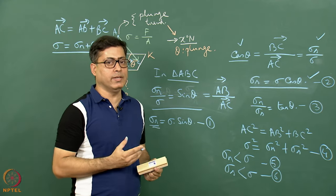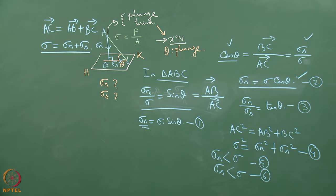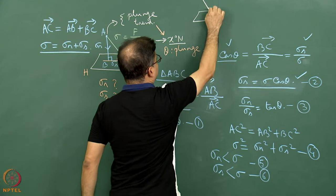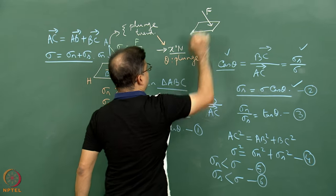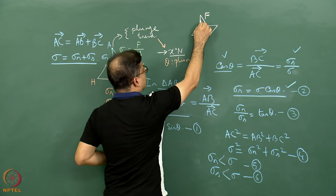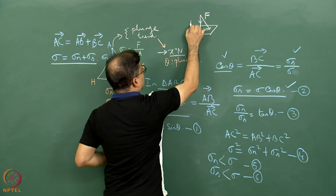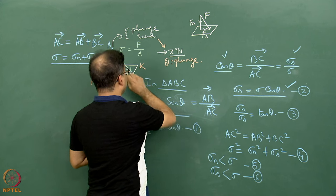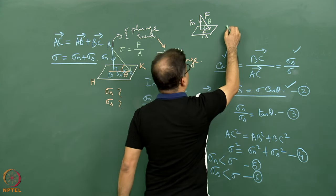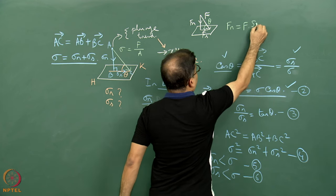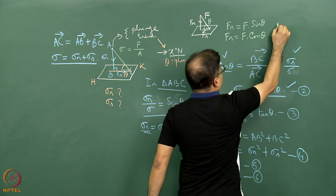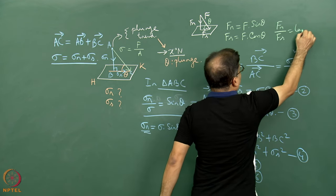What we have done in terms of stress, we can also look at in terms of force. For example, instead of a stress, consider a force applied in an inclined manner on a horizontal plane. Here also we can resolve this force into a normal force and a shear force. Theta is the plunge of the line of action of force. Similar results come out: F_n equals F·sin(theta), F_s equals F·cos(theta), and F_n divided by F_s equals tan(theta).